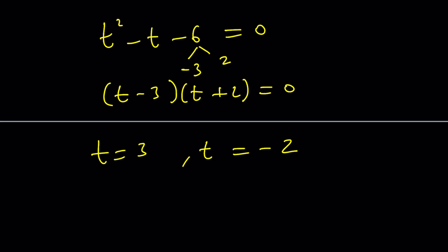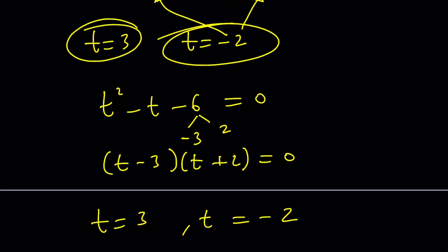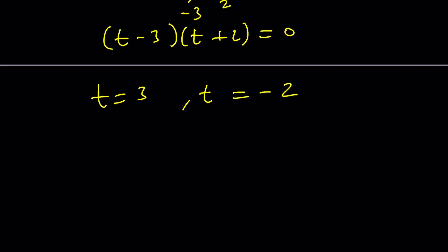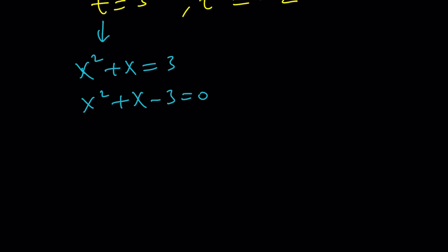And you're basically looking for two numbers whose product is negative 6 and whose sum is negative 1. Those numbers are negative 3 and 2. So you can write it as t minus 3 times t plus 2. Of course, they're going to be the opposites of the solutions. So from here, you're going to get the same thing. t equals 3 and t equals negative 2. But t is not the end goal. What is t? t is x squared plus x. So I still need to back substitute.